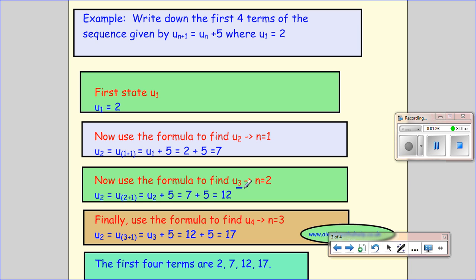Now I want to find the third term, and if I'm looking at the third term, I need 2+1 to give me the 3, so we're having n equals 2. So I'm taking n equals 2, I'm taking the second term, add 5, so I'm taking this one, adding 5 to get me 12.